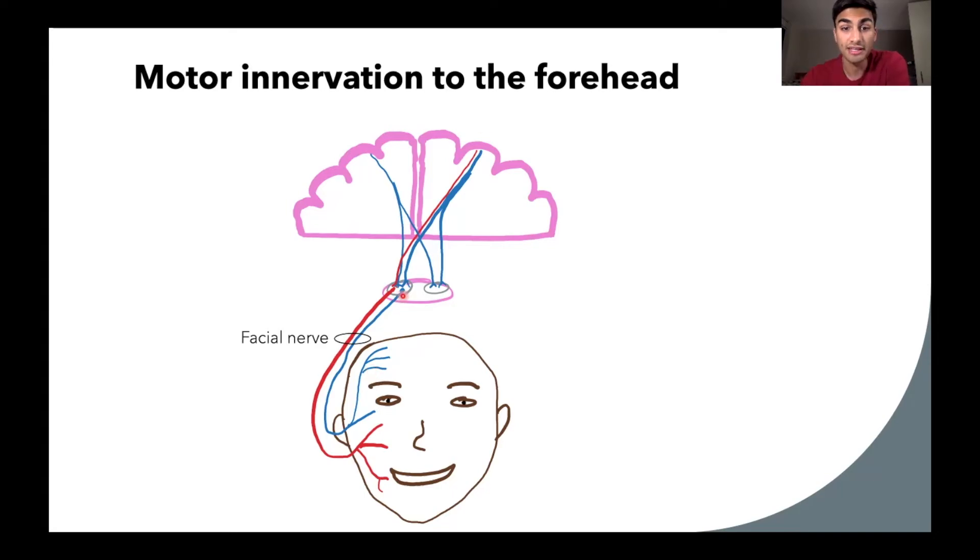The lower face is controlled by this red neuron here. We notice that it's coming from the left side of the brain, synapses in the facial nerve nucleus, continues down and provides control to the lower face. So the key takeaways here are that the upper face is receiving bilateral innervation, so both sides of the brain are providing control to the upper face. However, the lower face is only being controlled contralaterally. This red neuron only comes from the opposite side of the brain to control the lower face.